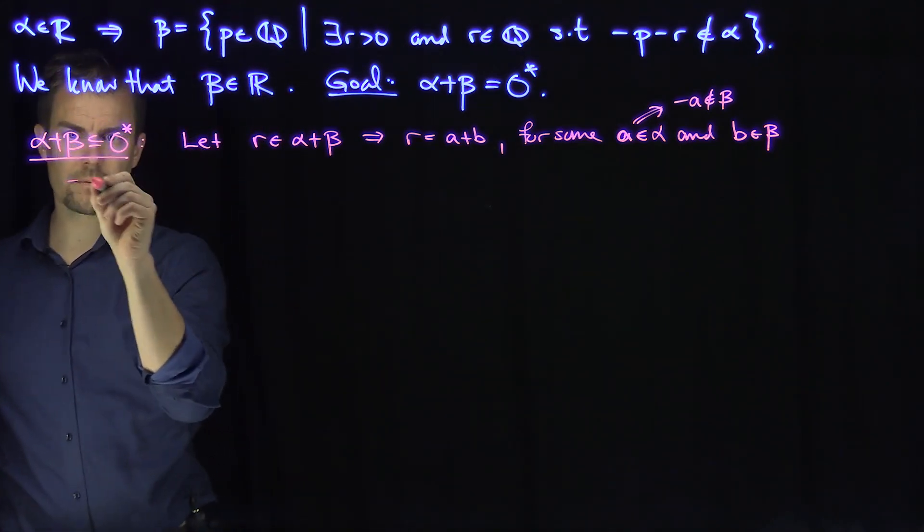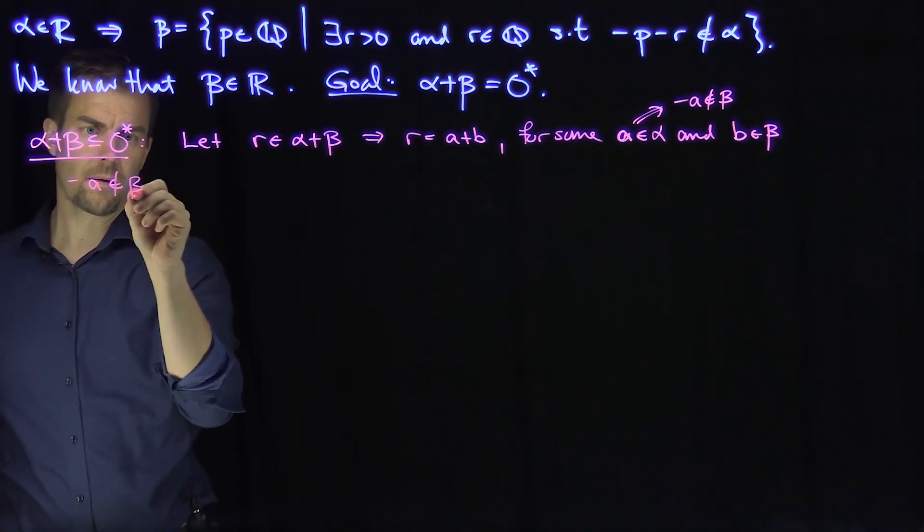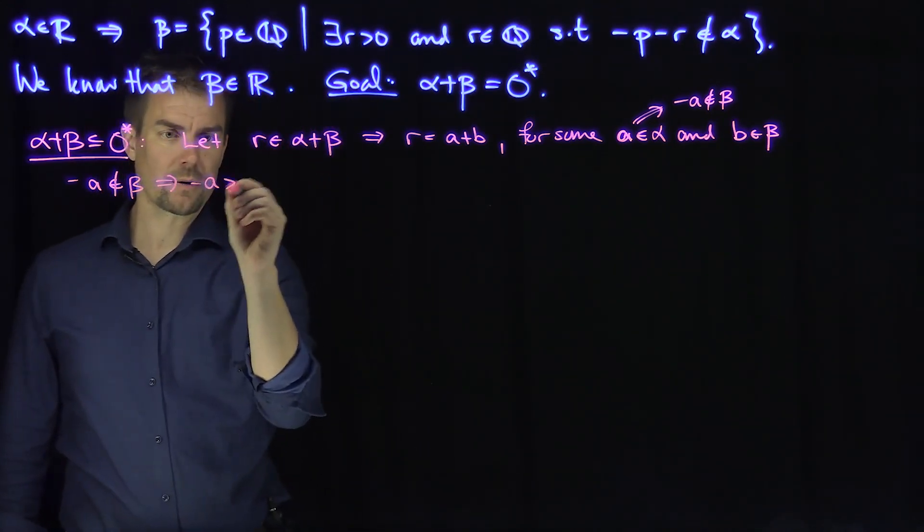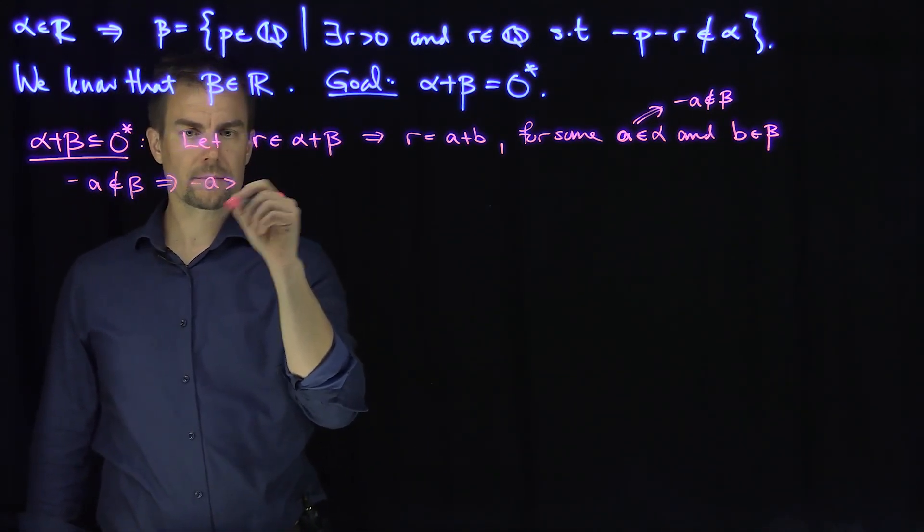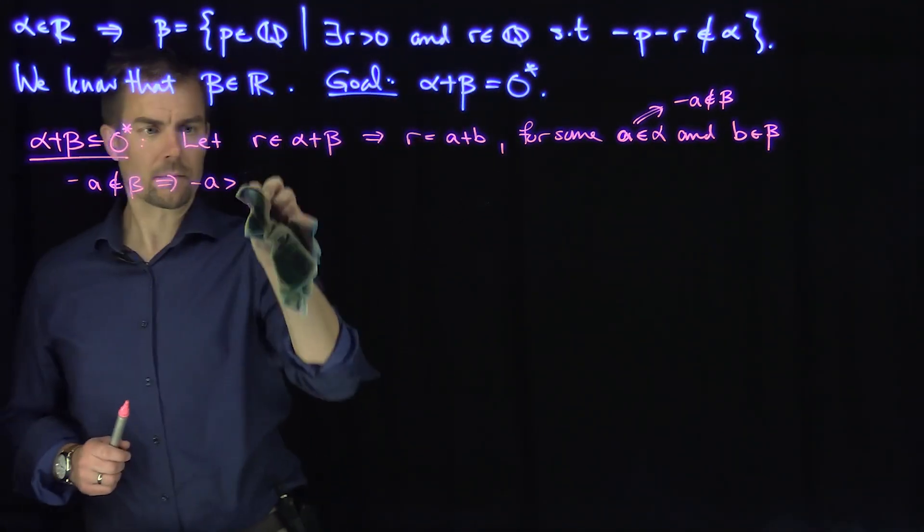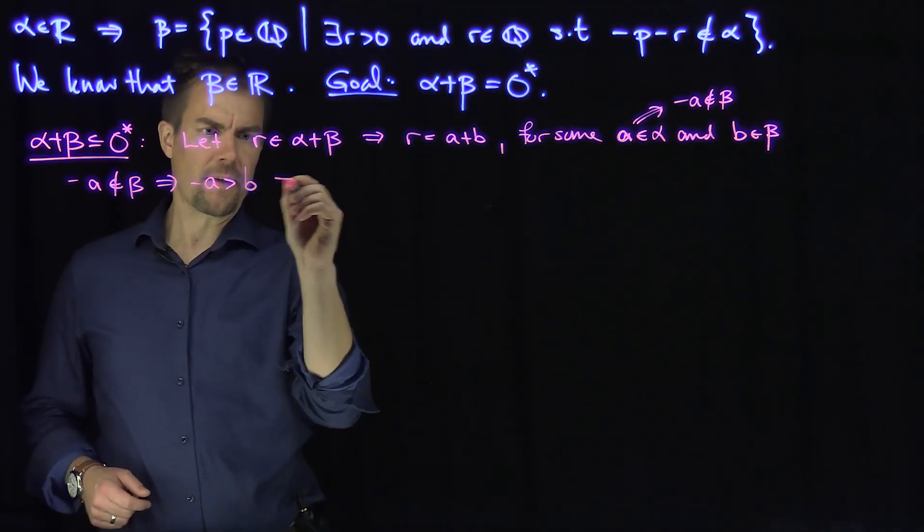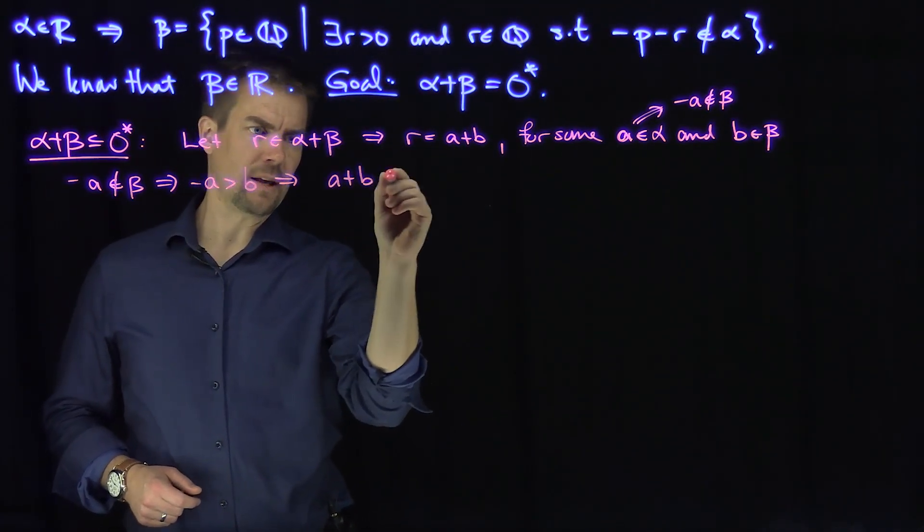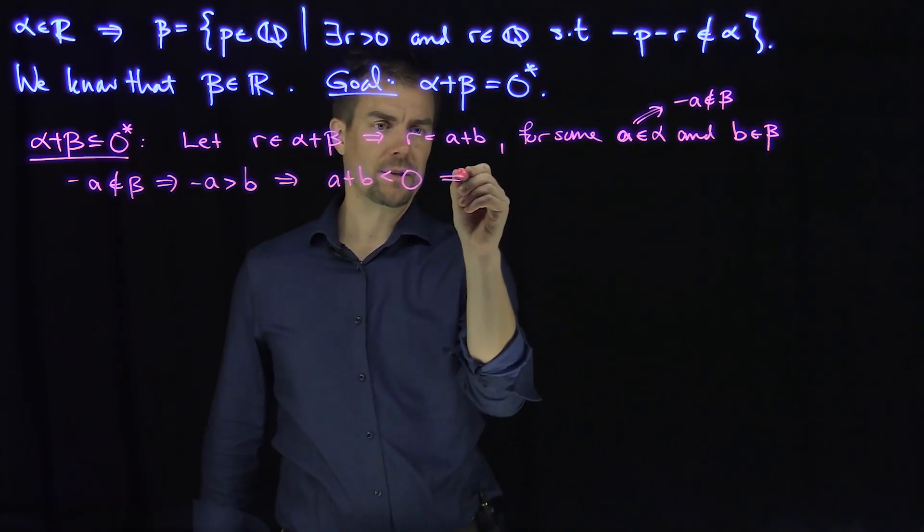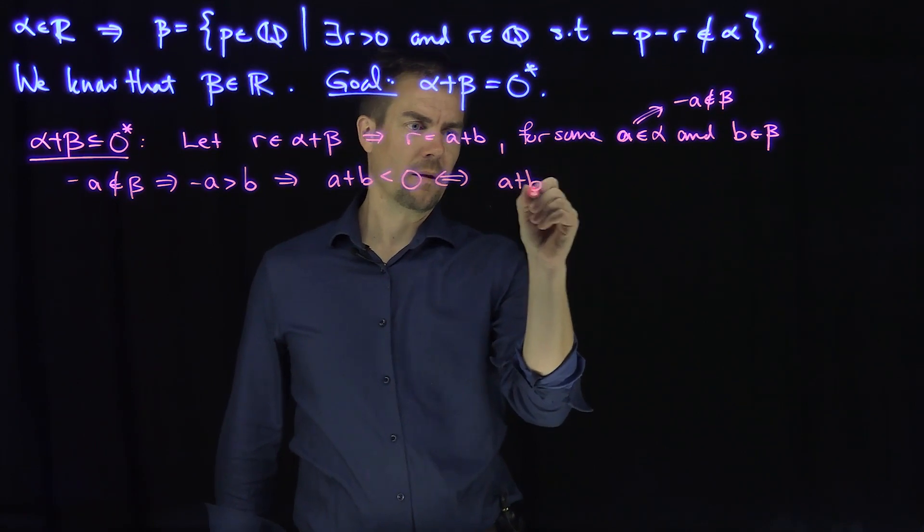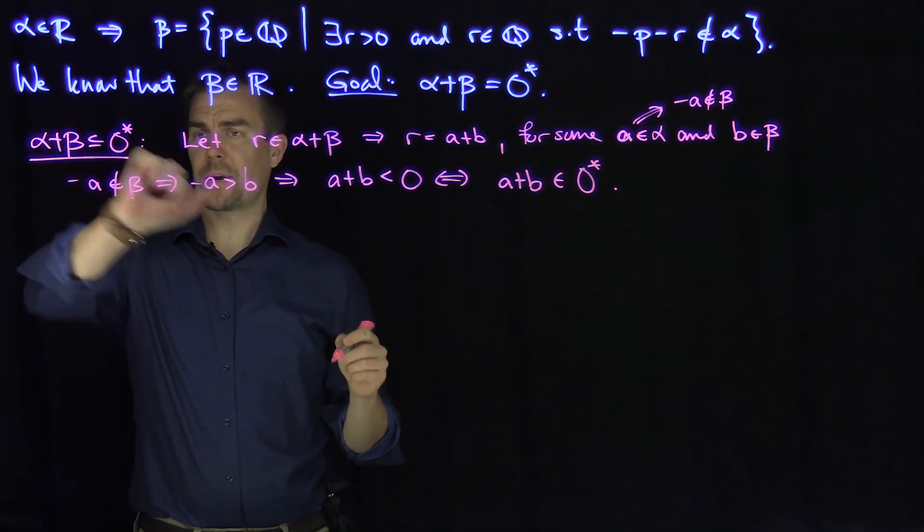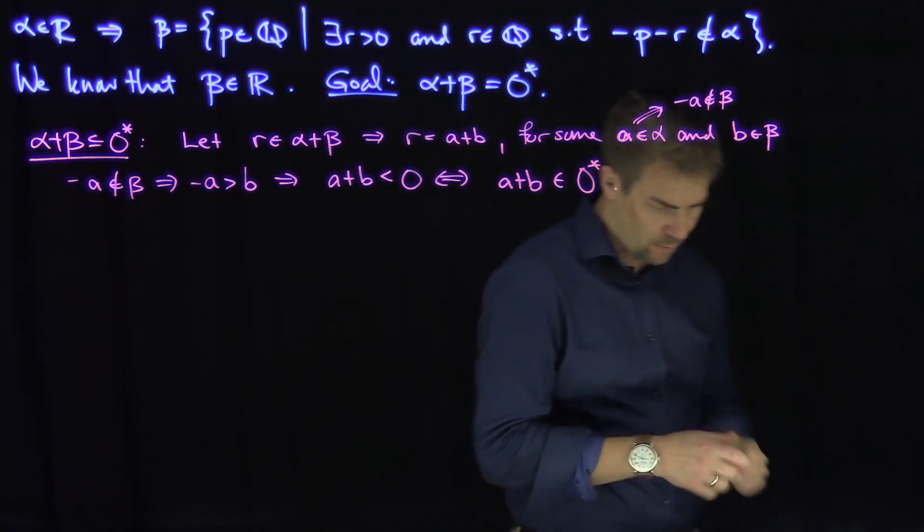So negative a not in beta implies that negative a is larger than b. And that implies that a plus b is less than 0. This is equivalent to saying that a plus b is in the zero cut. That's the first inclusion. So we have that alpha plus beta is contained in the zero cut. Now we'll do the opposite inclusion.